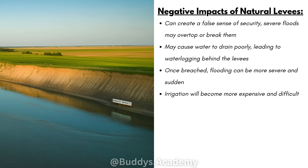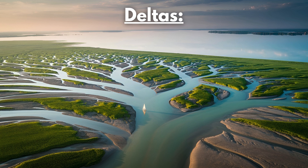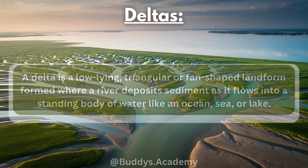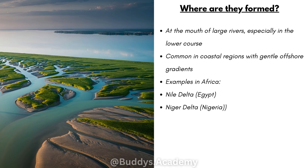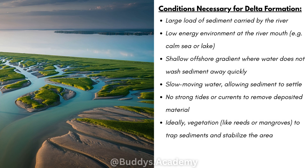Now let's take a quick look at deltas. A delta is a low-lying triangular or fan-shaped landform formed where a river deposits sediment as it flows into a standing body of water like an ocean, sea or lake. Deltas are formed at the mouth of large rivers, especially in the lower course, and they can be common in coastal regions with gentle offshore gradients. For delta formation, firstly you need a large load of sediment carried by the river.